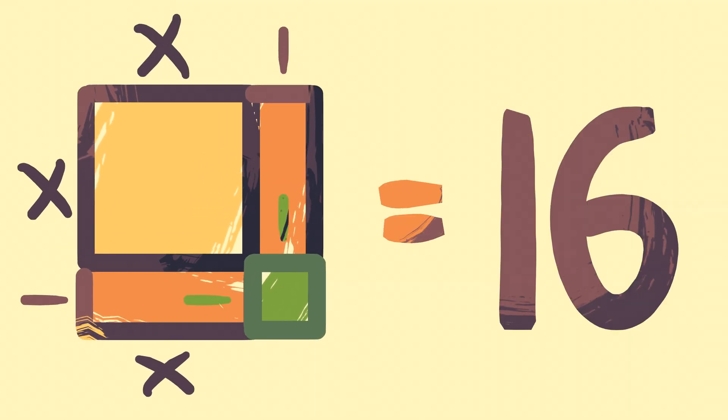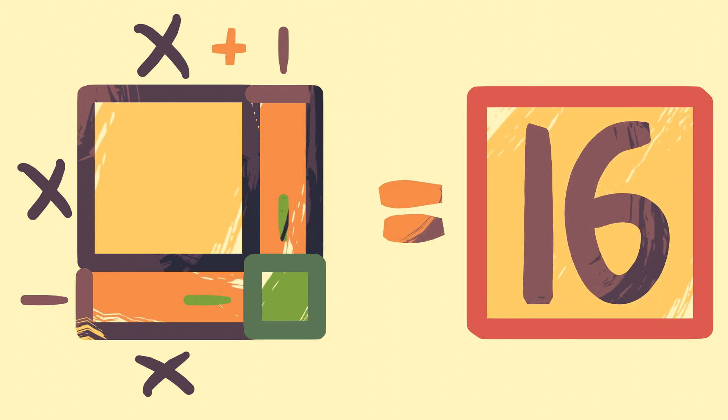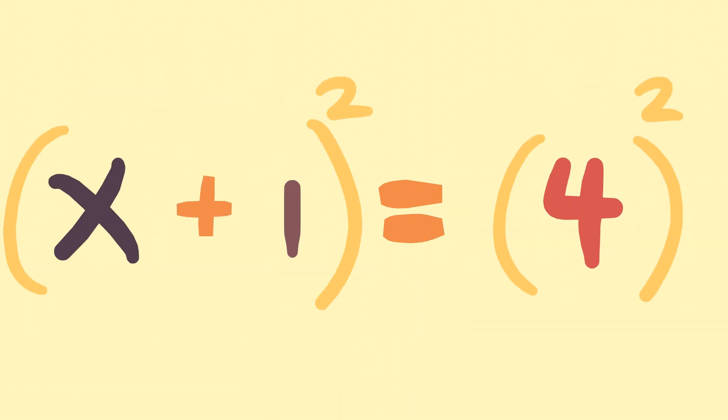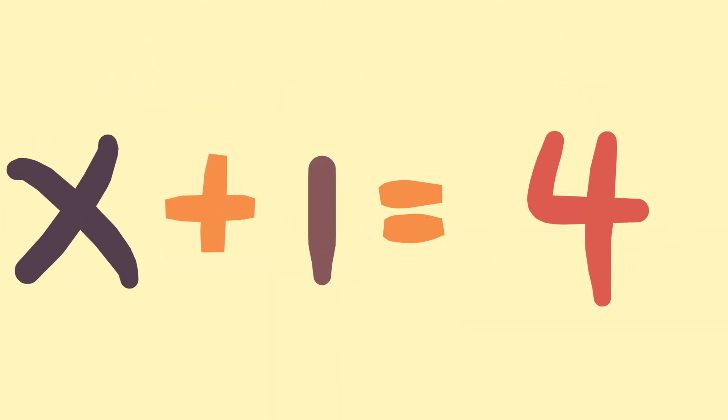You might already see the beauty of this arrangement. 16 itself is the area of a square with side length 4. The rest of the problem is trivially easy to solve, as we know the squares are equivalent. And indeed, 3 is a valid solution to this equation.